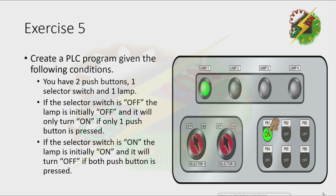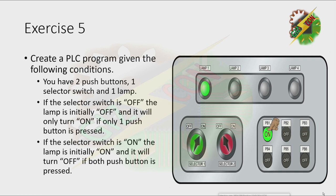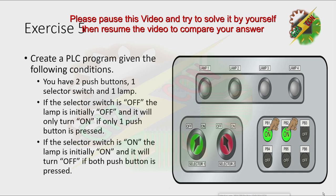With the selector switch off: pressing PB1 — lamp turns on. Pressing PB2 — lamp turns on. But when we press both PB1 and PB2 together, the lamp turns off. Now let's turn on the selector switch. The lamp is initially on. Pressing PB1 — lamp stays on. Pressing PB2 — lamp stays on. Then when we press both buttons, the lamp turns off.